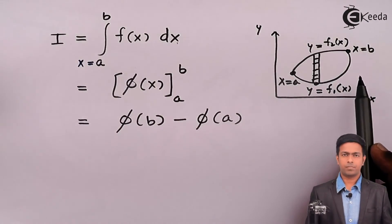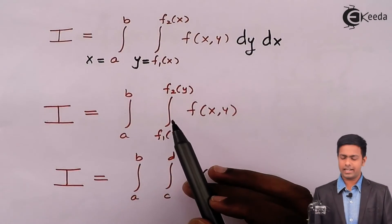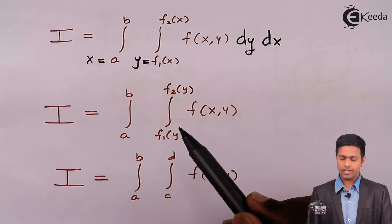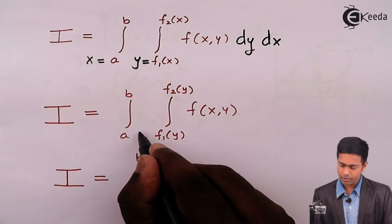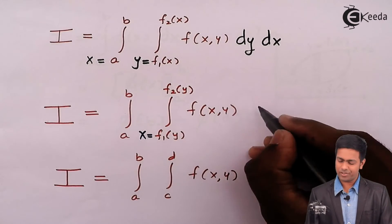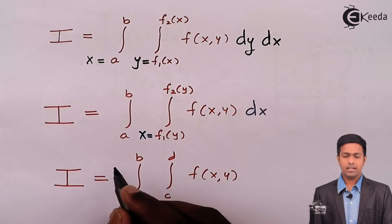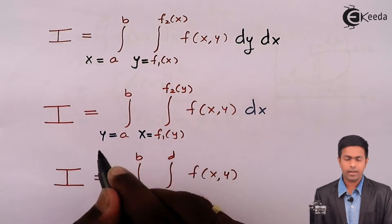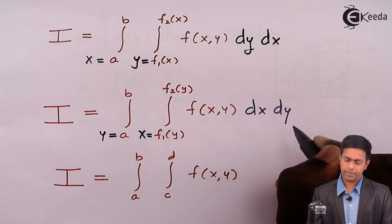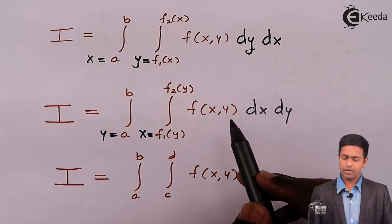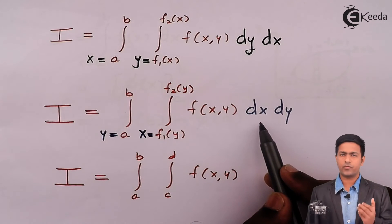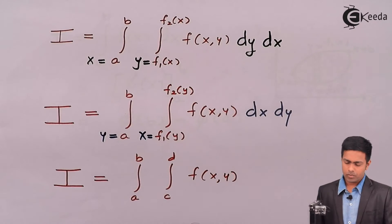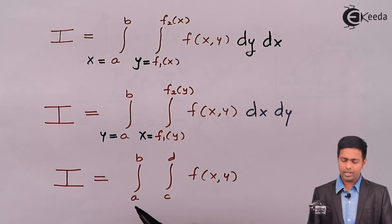In the second case, we have the same function but the limits are from f1(y) to f2(y) with constants for the other integral. Whenever the limit is a function of y, it is the limit for x, so we integrate with respect to x first and treat the constant part as the limit for y, then integrate with respect to y. Geometrically, here we consider a strip parallel to the x-axis.